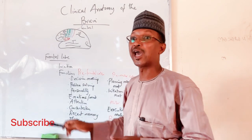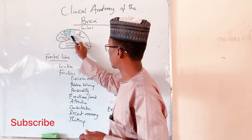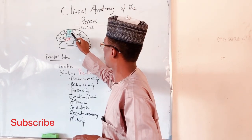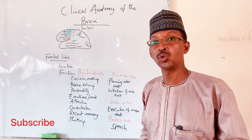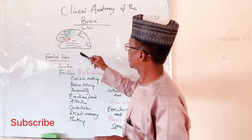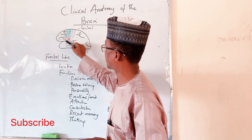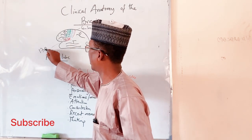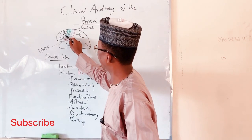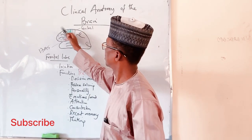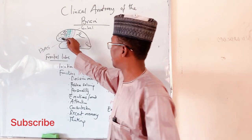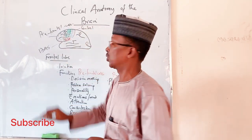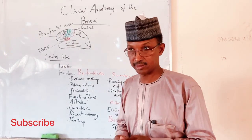The pre-central gyrus contains the primary motor area. Anterior to it is the pre-motor cortex or pre-motor area. Just below these two areas is Broca's area of speech. Everything lying anterior to the pre-motor cortex — including the superior, middle, and inferior frontal gyri — forms what we call the prefrontal area. Each of these areas has its own functions.